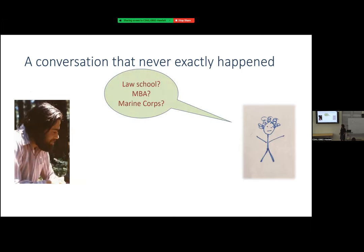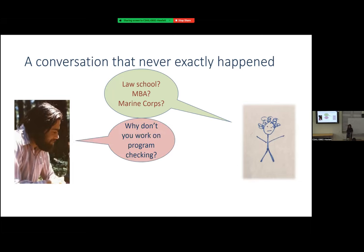I'm not really getting anywhere, everybody else is doing amazing things. Maybe I need a plan B — law school, maybe, or an MBA. I thought these were good plan Bs, but actually some friends who did those are really unhappy now. It was important to have a plan B just to keep myself going. I even got a leaflet from the Marine Corps and thought, at least somebody will take me. But luckily, Emmanuel said: why don't you just work on program checking?